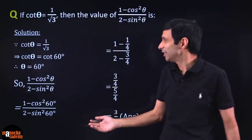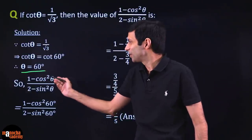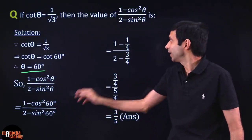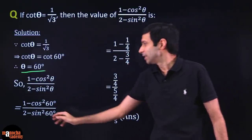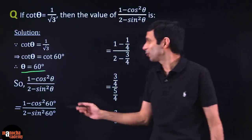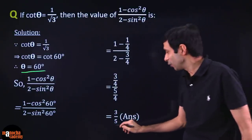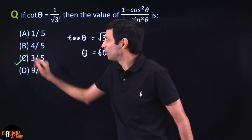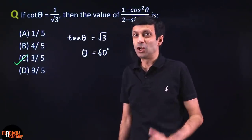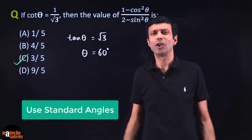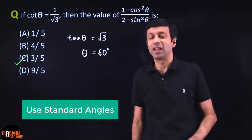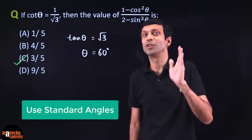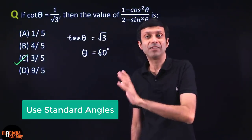cos 60° = 1/2, so cos²60° = 1/4. sin 60° = √3/2, so sin²60° = 3/4. Substituting: (1 − 1/4) / (2 − 3/4) = (3/4) / (5/4) = 3/5. The correct answer is option C, 3/5. Always look for standard angles in trigonometry questions — it makes them really easy. Make sure you know the table of standard angles for sin θ, cos θ, and tan θ at 0°, 30°, 45°, 60°, and 90°.